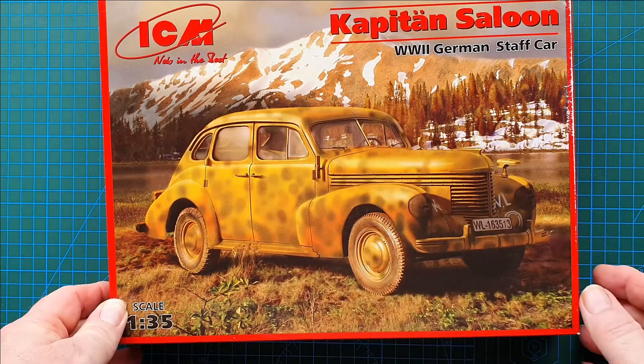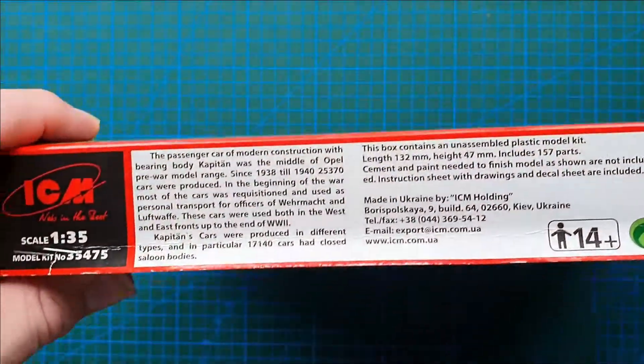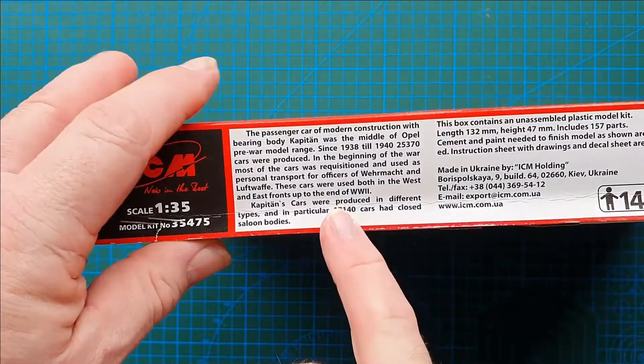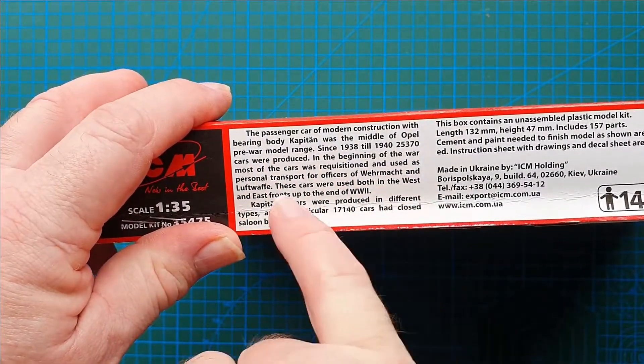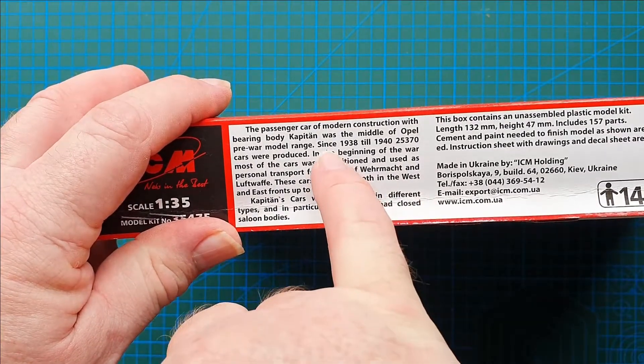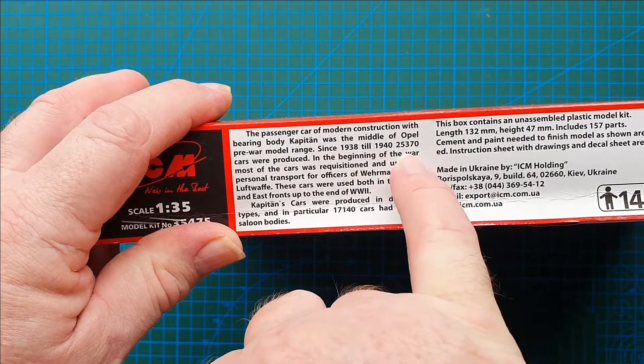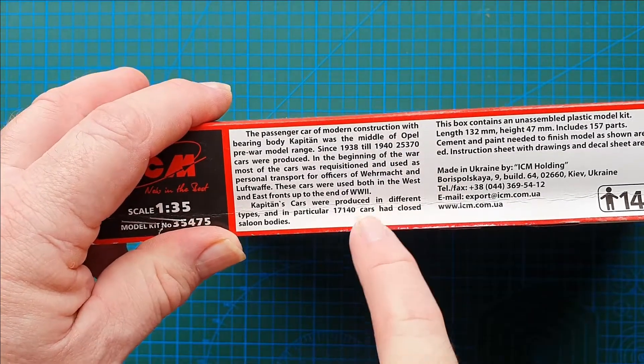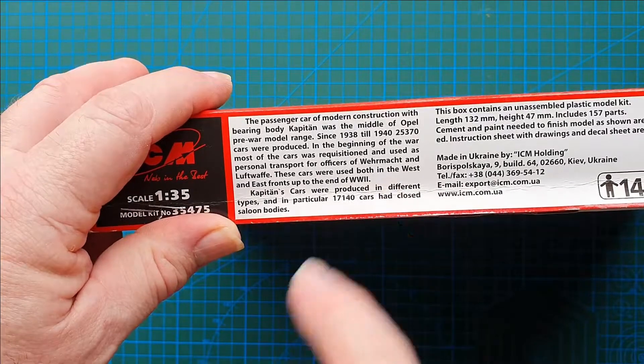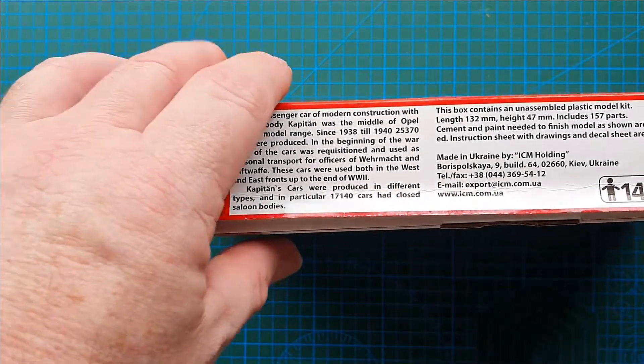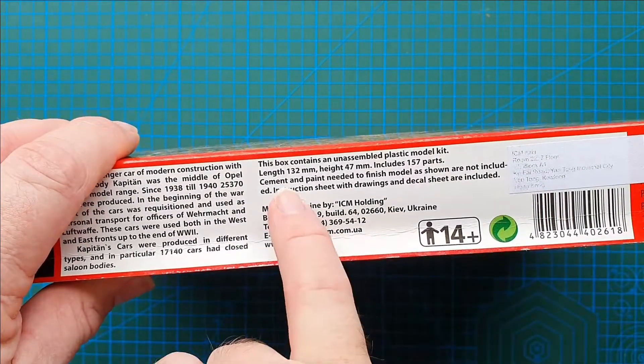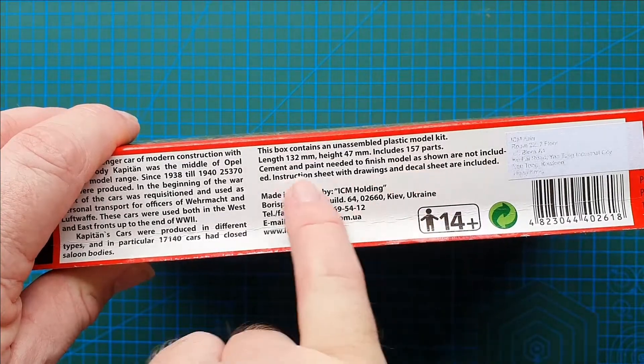On the side, brief history of the vehicle: 1938 to 1940. It says Opel produced 25,300 of which 17,000 odd were saloons. So they were quite prevalent. It tells you how many parts it has, how big it is.